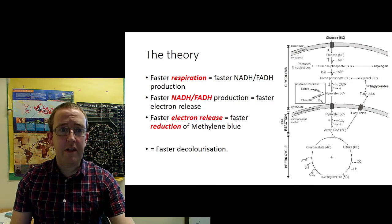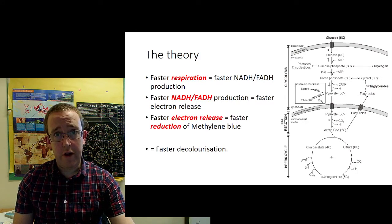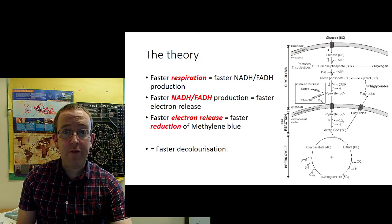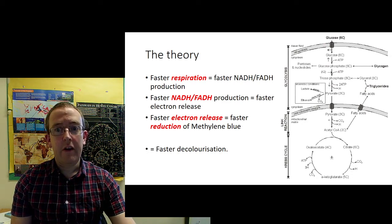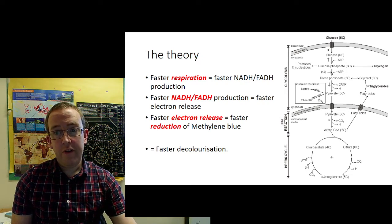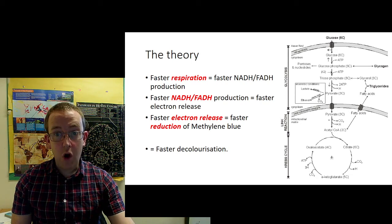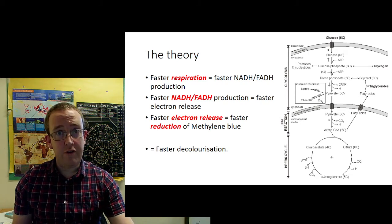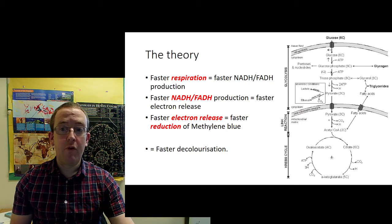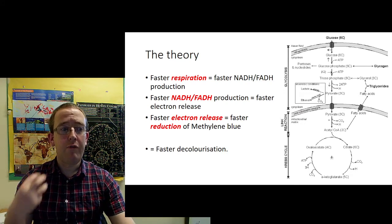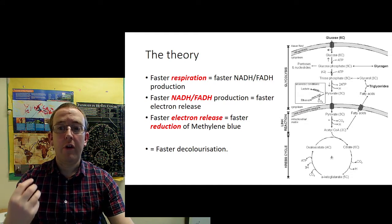So the theory for this basically goes along the lines that the faster the respiration goes, the faster and therefore the more NADH and FADH you are producing. The faster production of NADH and FADH, the faster electron release that you've got, the faster the electron release, the faster the reduction of methylene blue and therefore the faster the decolourisation, so your job is to measure the rate of decolourisation of methylene blue.